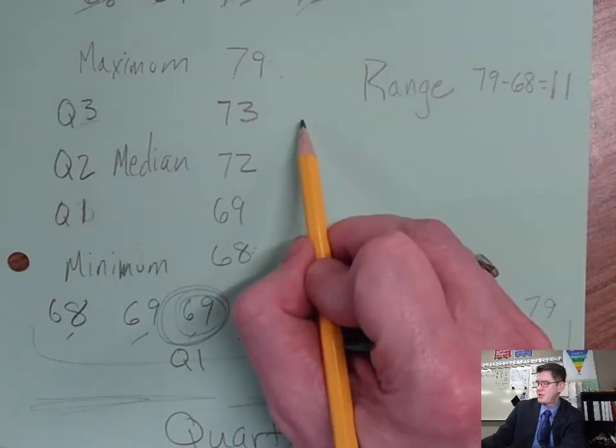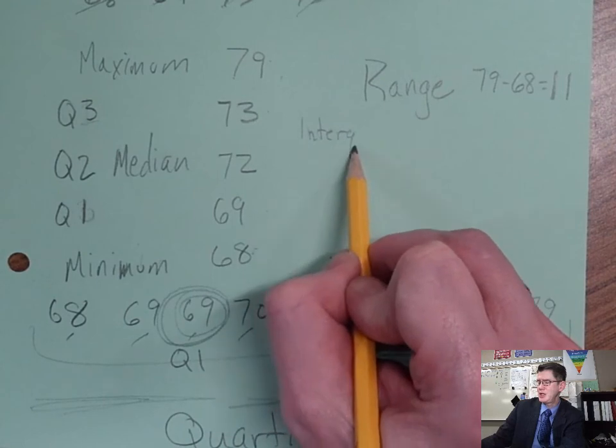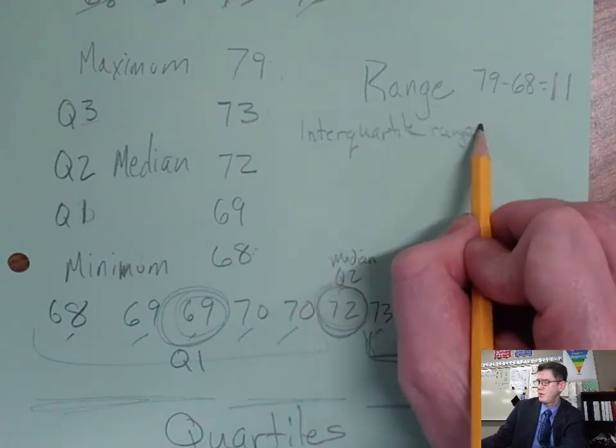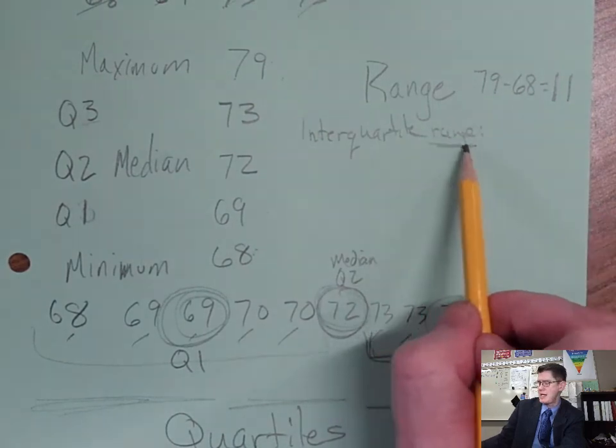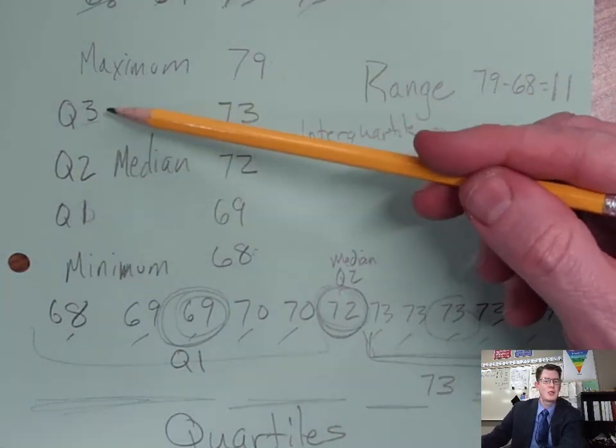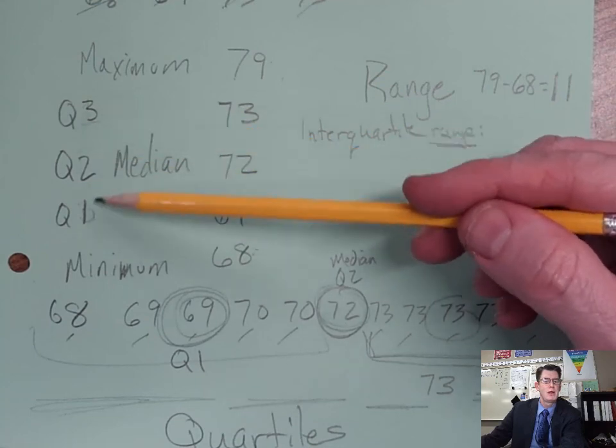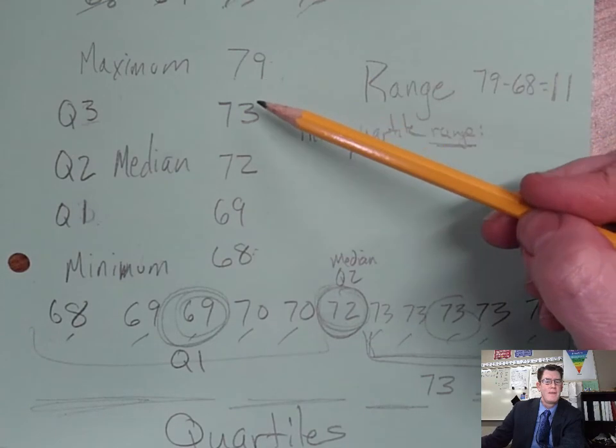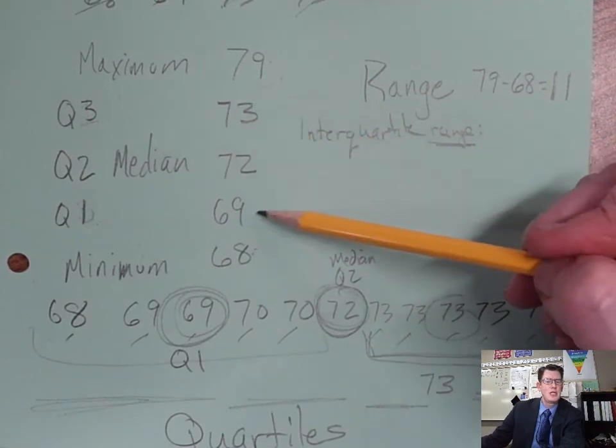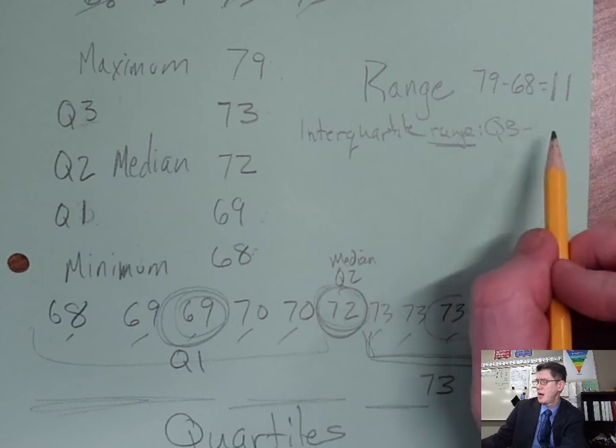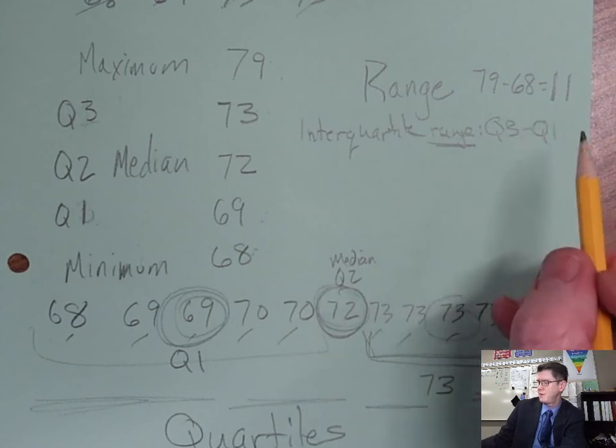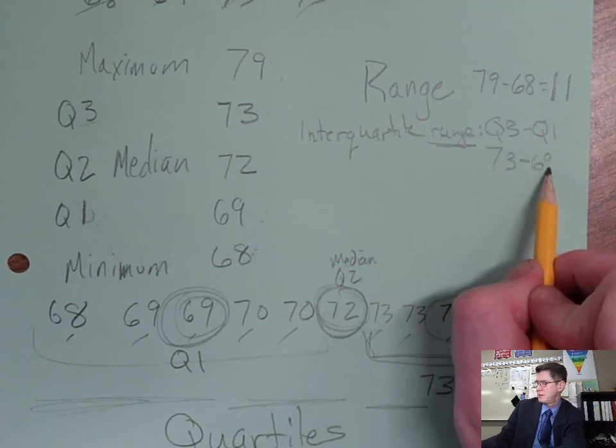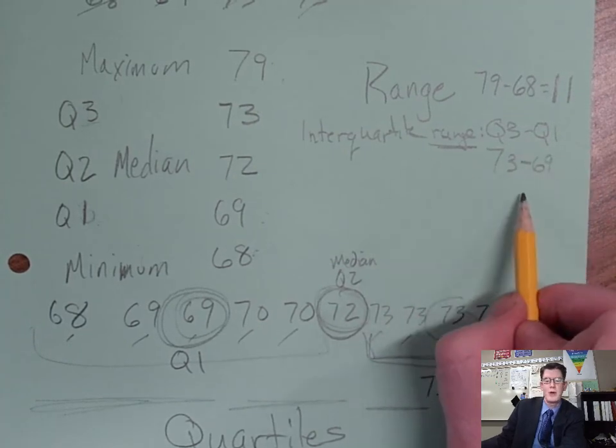And then there's this other number we have called the interquartile range. What is the range of these two inner quartiles, of these middle quartiles Q1 and Q3? So just like the range where we subtract, this time we're going to subtract the Q3 from the Q1. Well, Q3 minus Q1, so that would be 73 minus 69, which is, on this one, the interquartile range is 4.